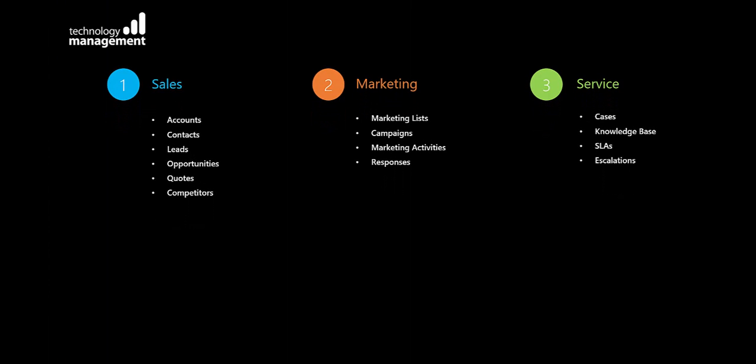There are three core areas that sit within CRM. The first area is sales. Here you keep track of your accounts and contacts, ensuring that they receive a great customer experience. This is the area where you can also enhance sales productivity and performance by keeping track of leads and opportunities to give you insight into the health of your sales pipeline.